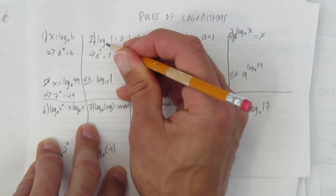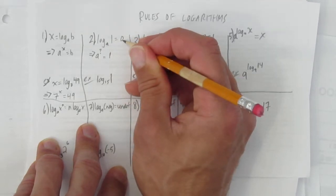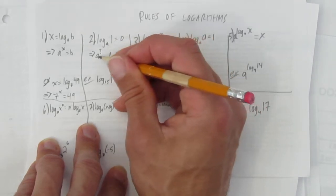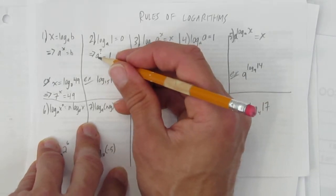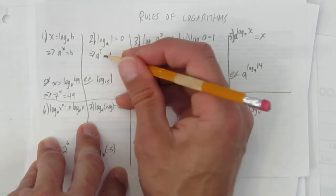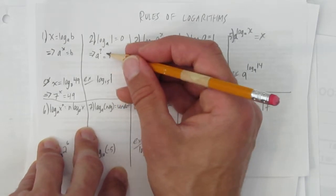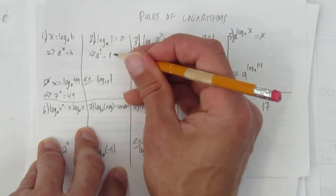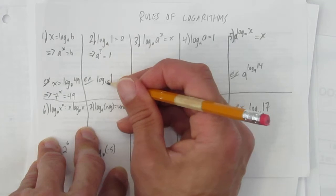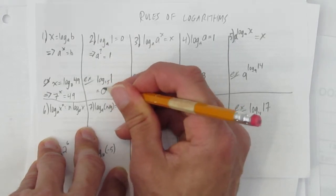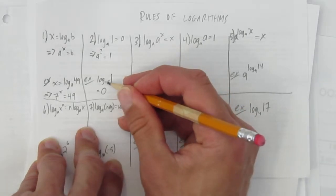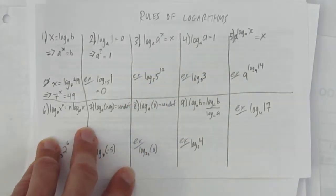This is the base, this is the exponent, this is the answer. So a to the power of what equals 1. No matter what a is, could be 7, could be 105. 105 to the power of what makes 1, it has to be 0. That's a rule of exponents. So you don't need to show this work. You just see log of any base, for example, log base 15 of 1, and you know right away the answer is 0 because only 15 to the power of 0 could give 1. That's rule 2.